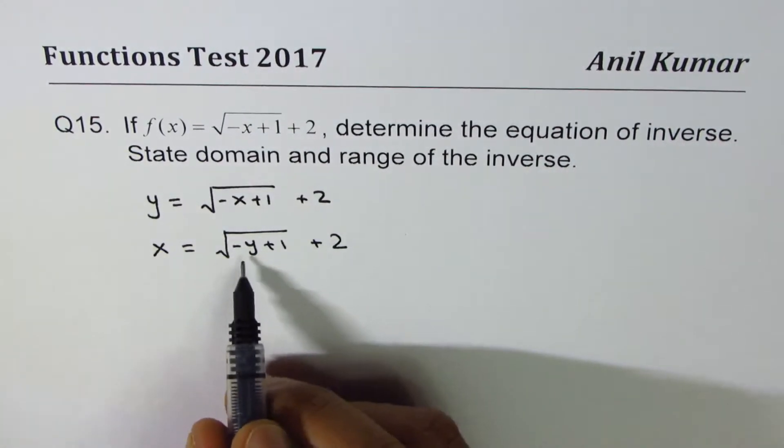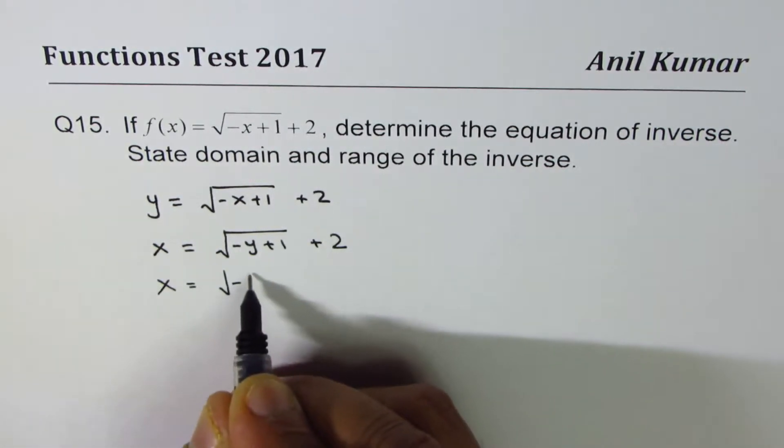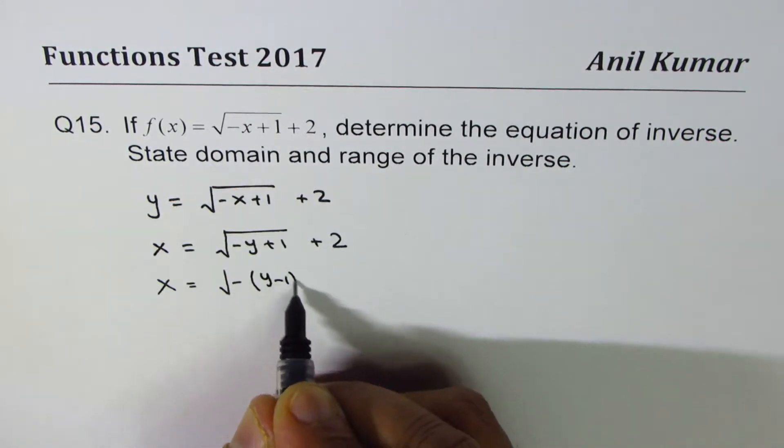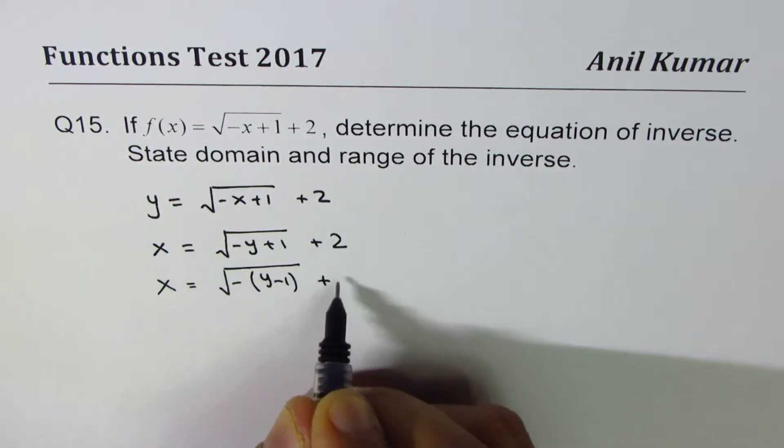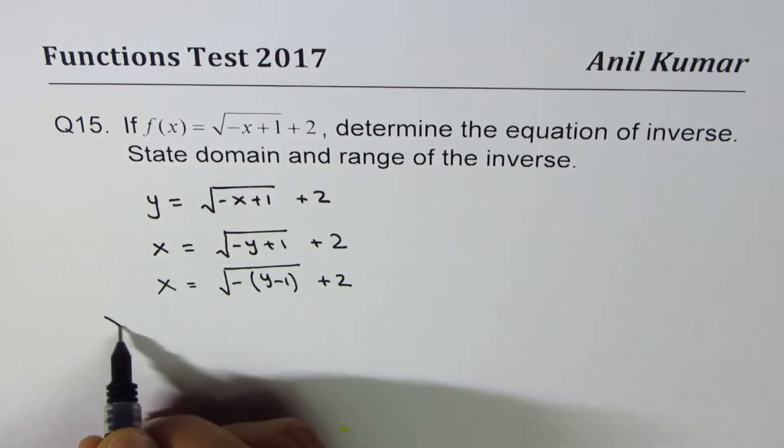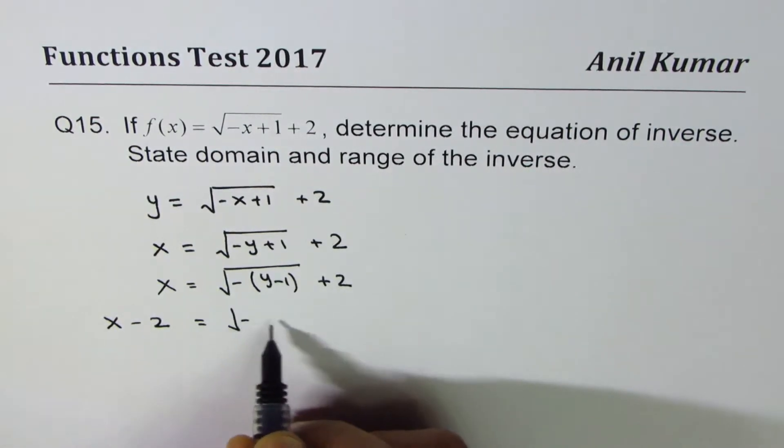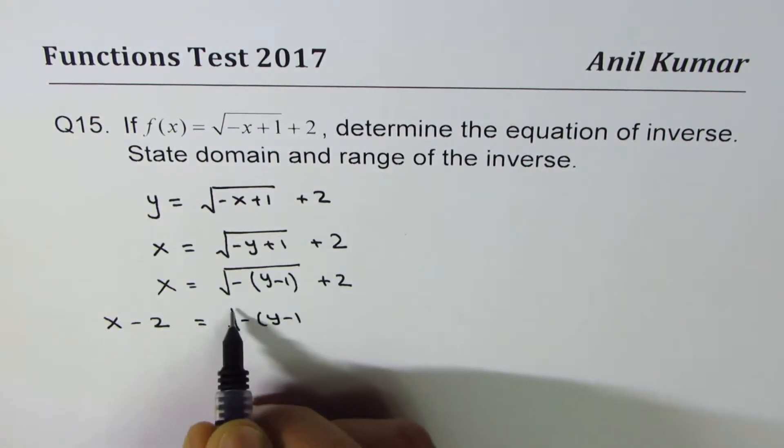I normally prefer to write the inside term with negative. It helps actually. I could write this as taking minus common. I get y minus 1. Do you see that? It will make things clear. You'll soon appreciate. Bringing to the left side, we get x minus 2 equals square root of minus y minus 1.